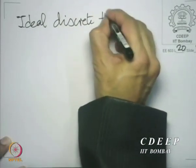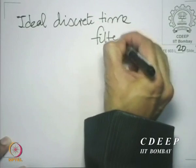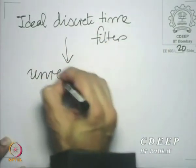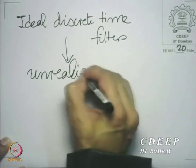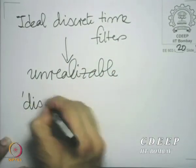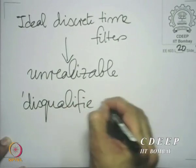Warm welcome to the twentieth lecture on the subject of digital signal processing and its applications. We have been discussing the synthesis of discrete time filters, and we should recapitulate for a couple of minutes what we have done so far on that theme. We have been looking at the ideal discrete time filters first, and we realized that they are unrealizable — they are disqualified, so to speak, on three counts.